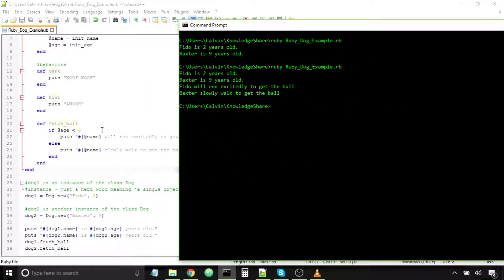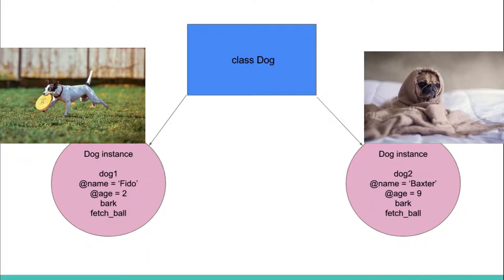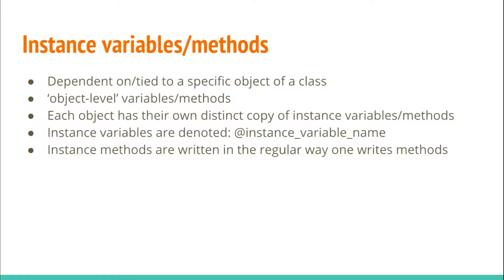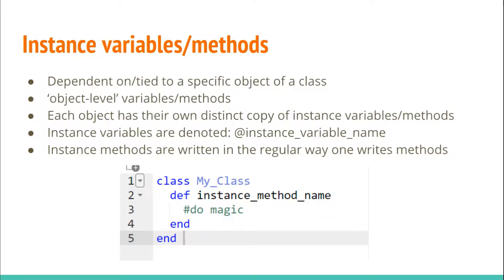We see that depending on the state of the specific object that this method is tied to, it'll execute different actions. So an instance method is dependent on the current state of the object it's tied to. To summarize: instance variables and methods are dependent on a specific object of a class — they are object-level variables and methods. Instance variables are denoted with the at sign (@), and instance methods are written inside a class block.